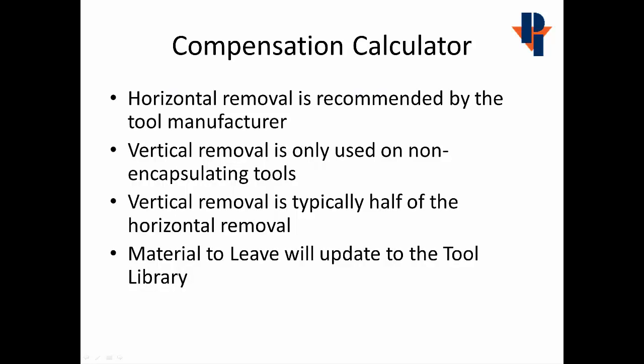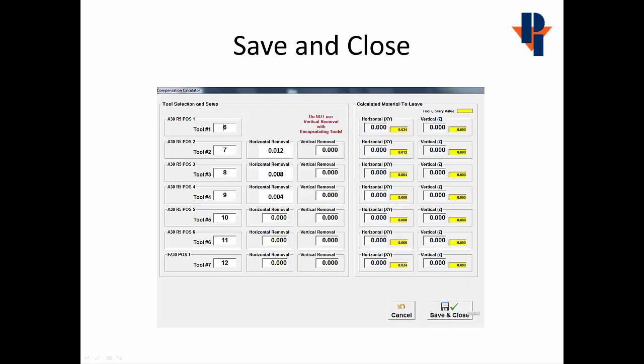We'll enter in the removal amounts from our ITM sheets that were specified by the tool manufacturer. Horizontal Removal is recommended by the tool manufacturer. Vertical Removal is only used on non-encapsulating tools, and vertical removal is typically half of the horizontal removal amount. The material to leave will be updated in the Tool Library. Now that we have our values entered, we will Save and Close.